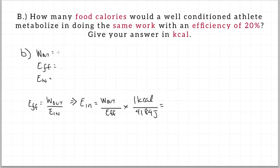To solve this problem, we have to find the energy in needed by the athlete to do the same amount of work as part A, which was 2.2 times 10 to the power of 5 joules. From the question, we know that the efficiency is 20%.